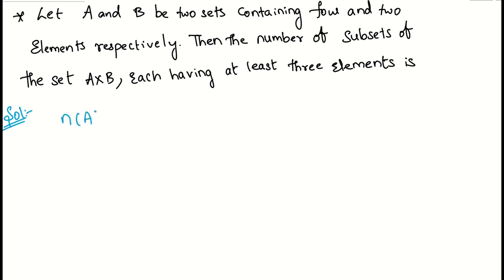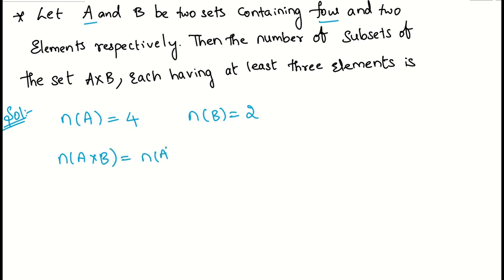The number of elements in set A is four and in set B is two. We know the formula: number of elements in A×B equals number of elements in A multiplied by number of elements in B. So the number of elements in A×B is 4×2 = 8.